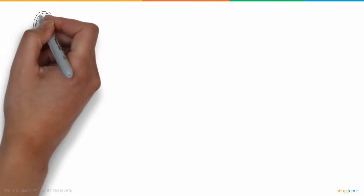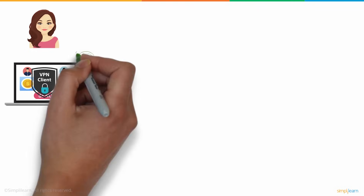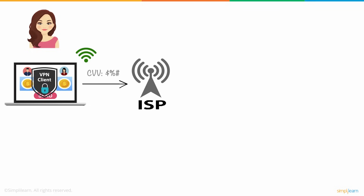For using a VPN, Jude's first step would be to install software-based technology known as the VPN client on her laptop or smartphone, which would let her establish a secure connection. The VPN client connects to the Wi-Fi and then to the ISP. The VPN client then encrypts Jude's information using VPN protocols.